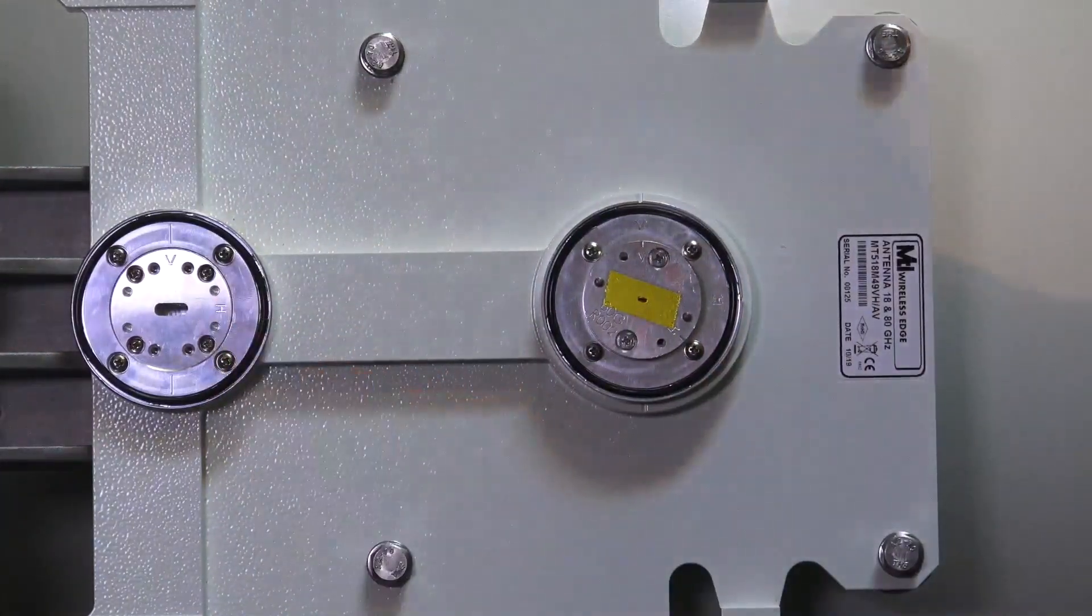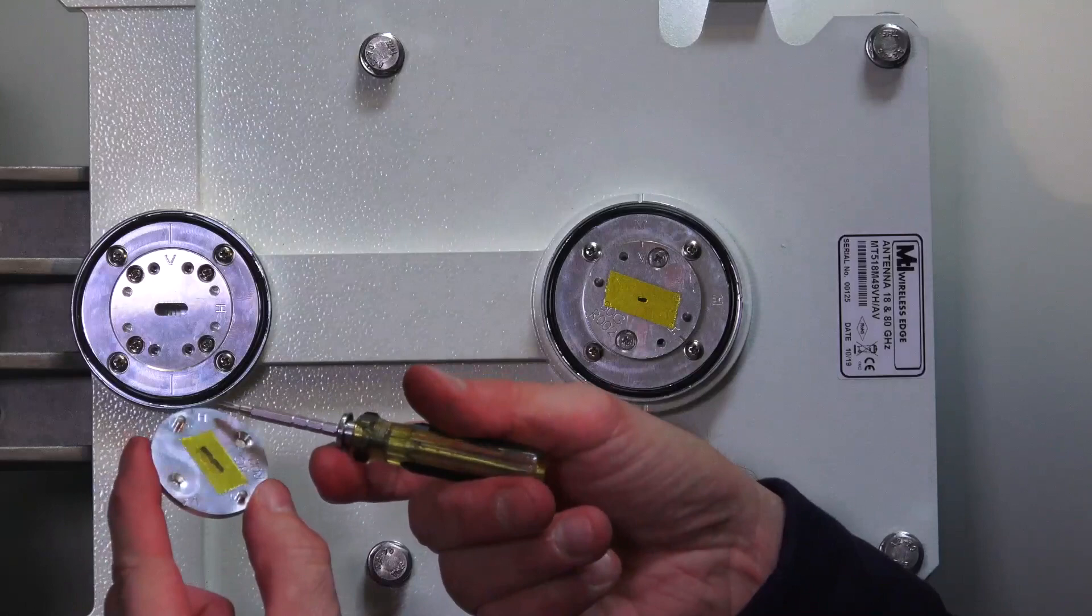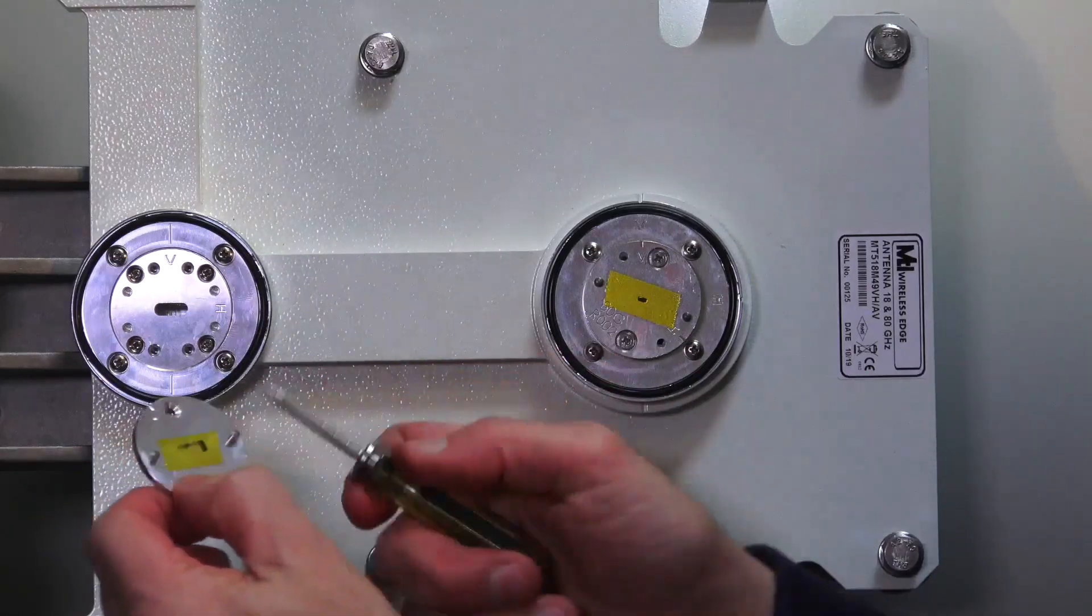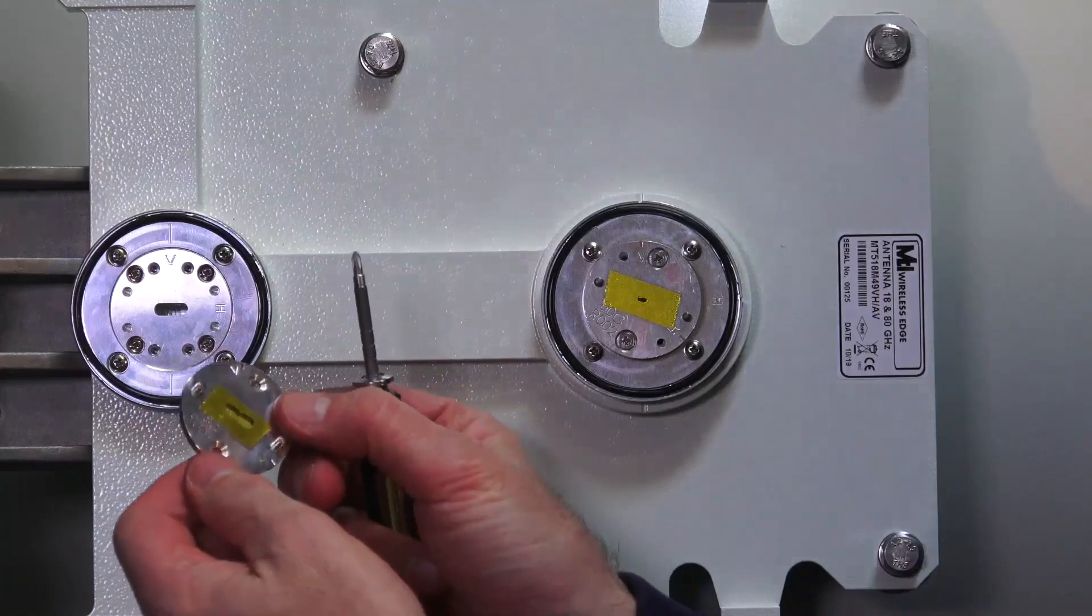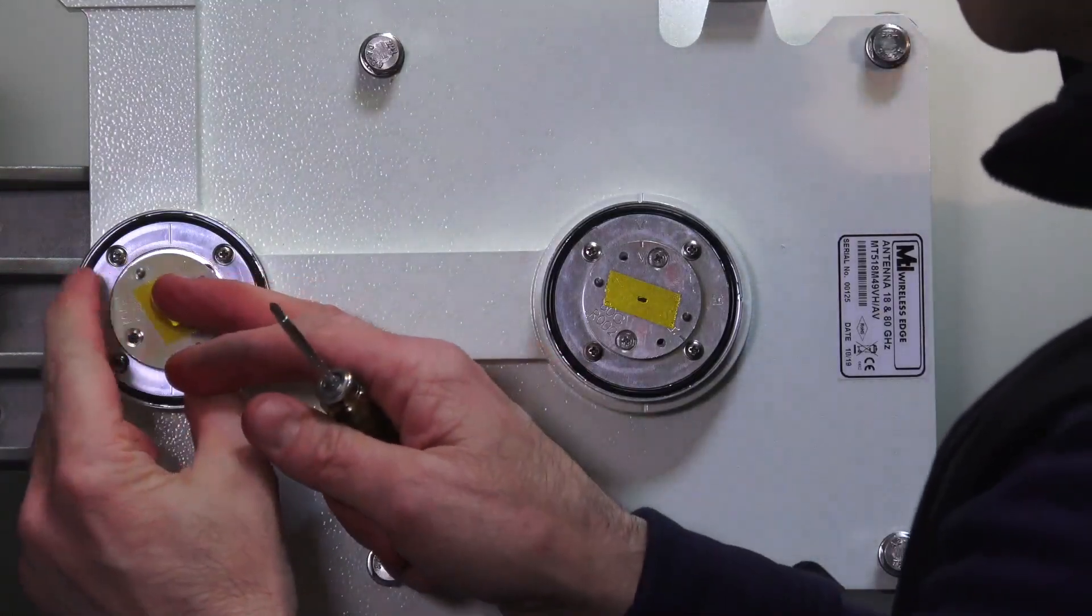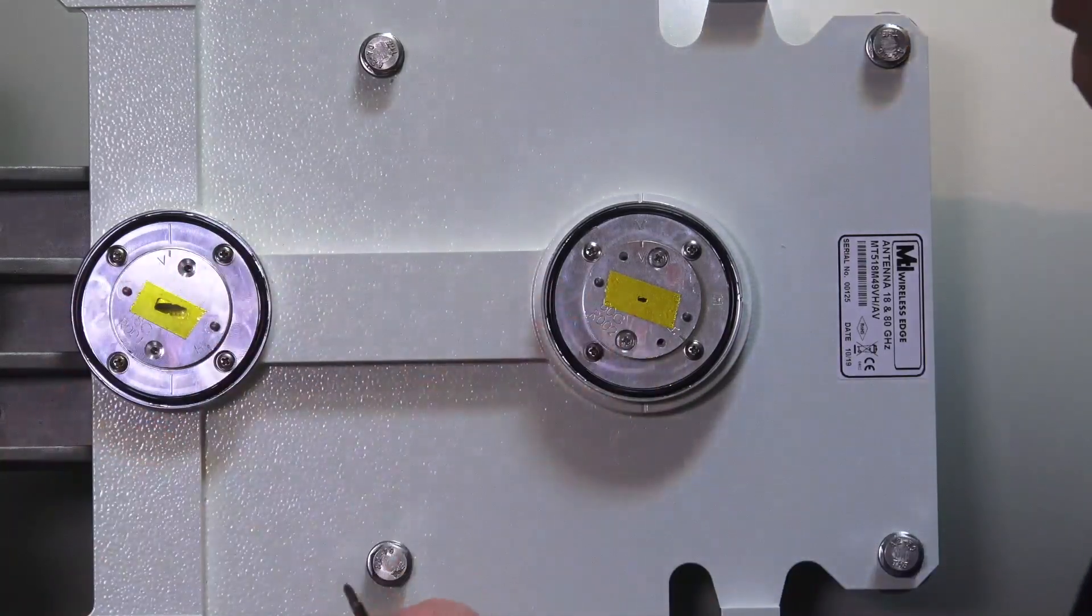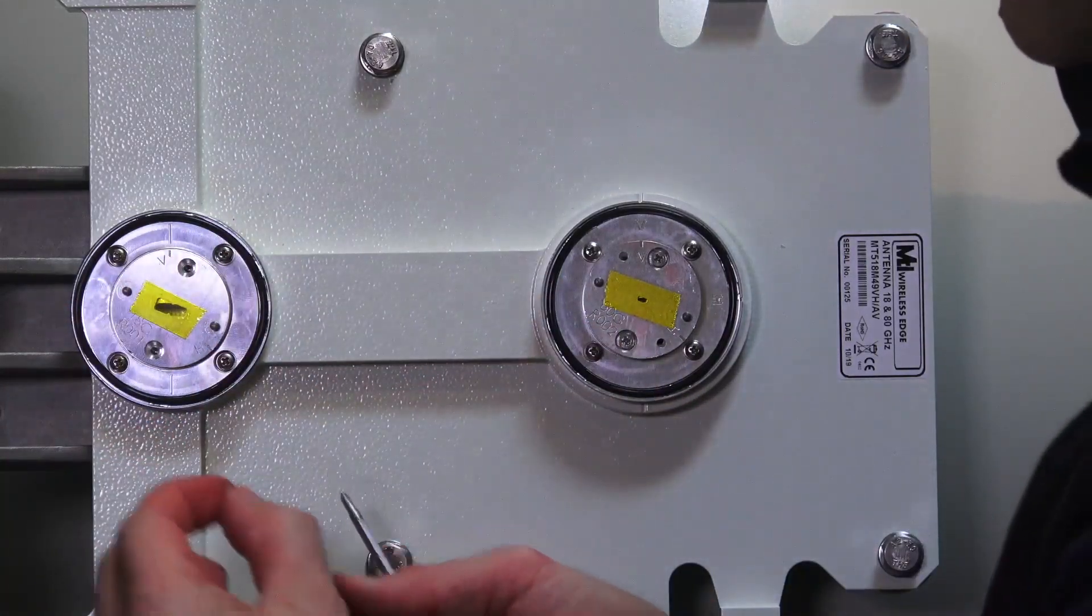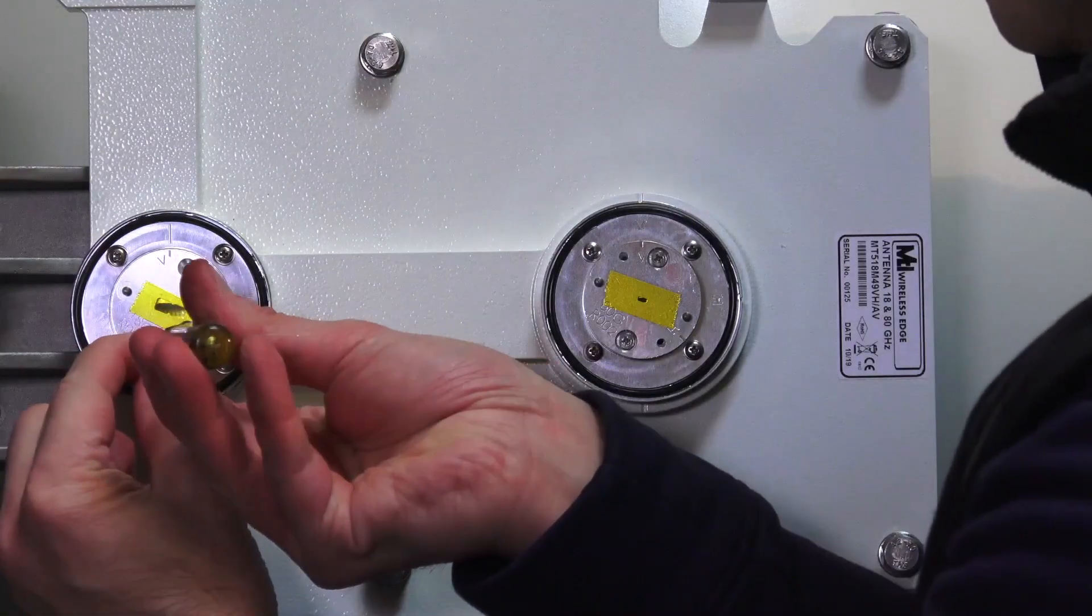Okay, and the last step is to put the polarizer plate on. So again, pay attention to the labeling on here. There's an H with a line and a V with a line. We're going to align those V's up together since we're doing vertical polarization. Polarizer plate is correctly oriented and two more screws to hold that in place.